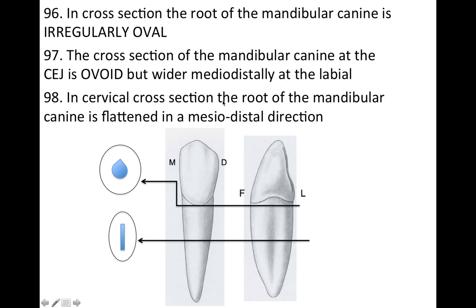In cervical cross-section, the root of the mandibular canine is flattened in a mesiodistal direction. As you go lower in cross-section, imagine squishing the tooth from the mesial and distal with your fingers — it gets really skinny. That's what the root looks like at that level, and the canal is also a little more flattened as a result.